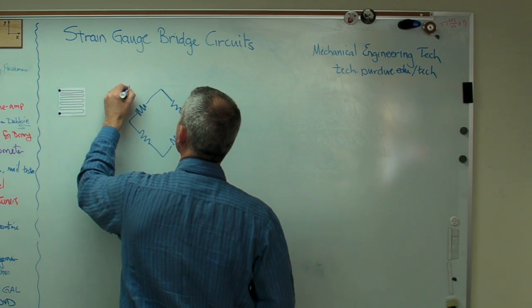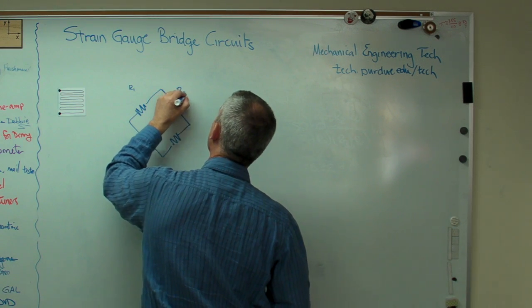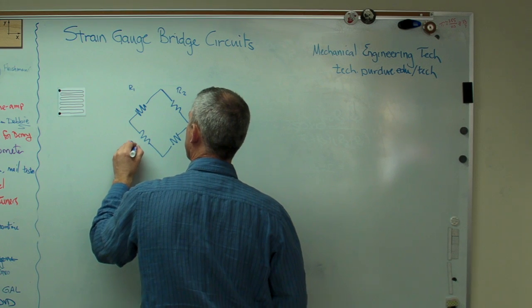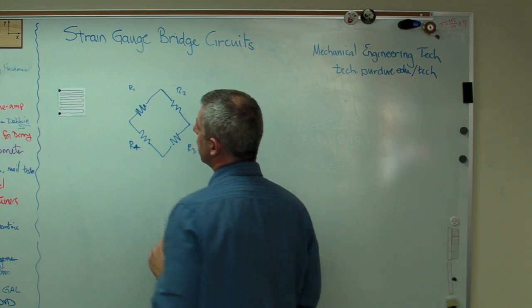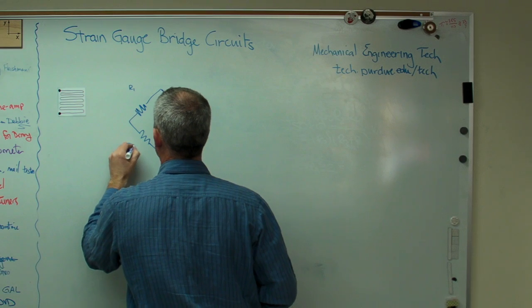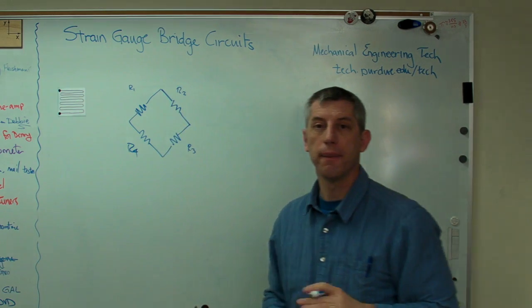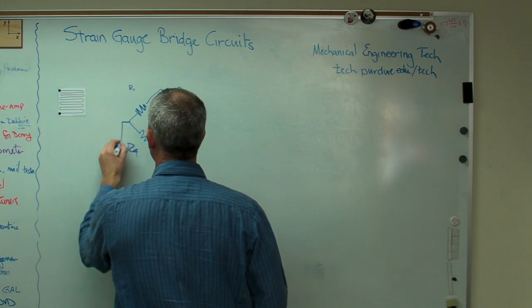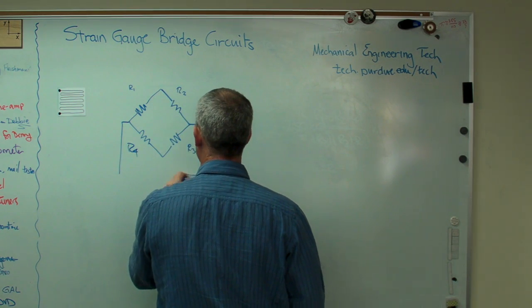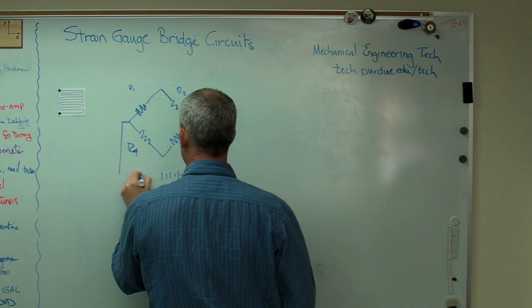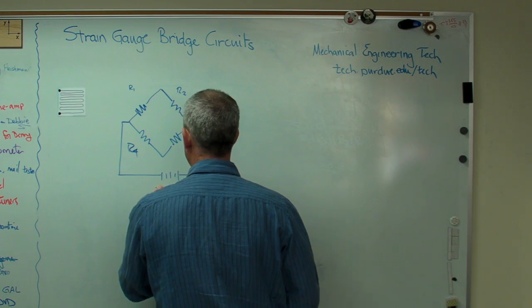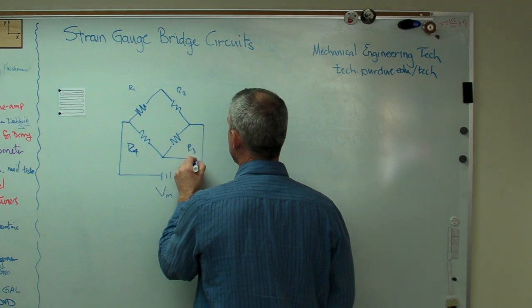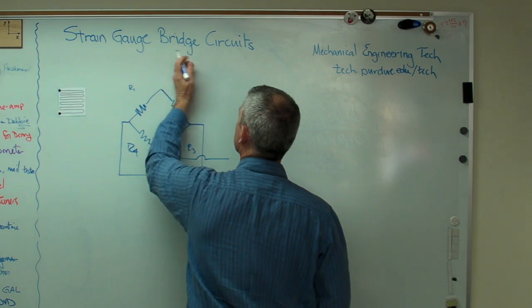Now, I'm going to very creatively call that R1, R2, R3, and R4. So we've got that. Now, we have to have some power going into it. So we're going to have voltage going in. That's V in. And I need to get a signal out of it. So let's do that.